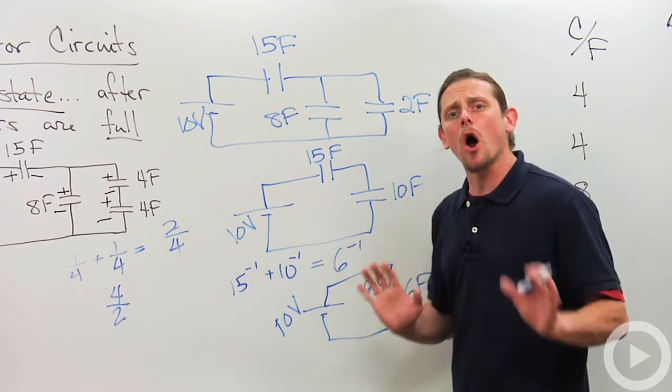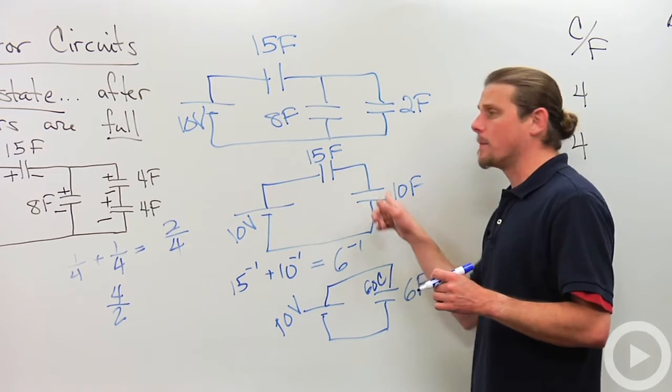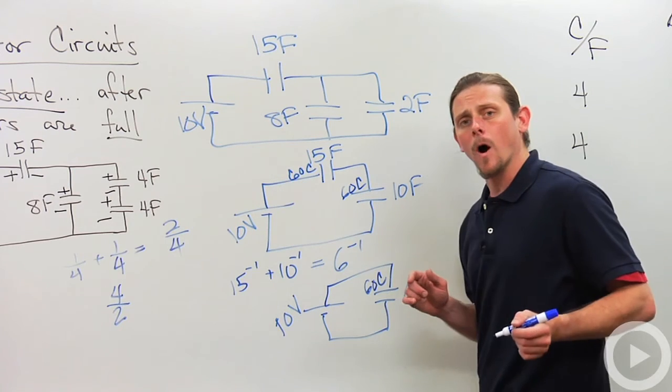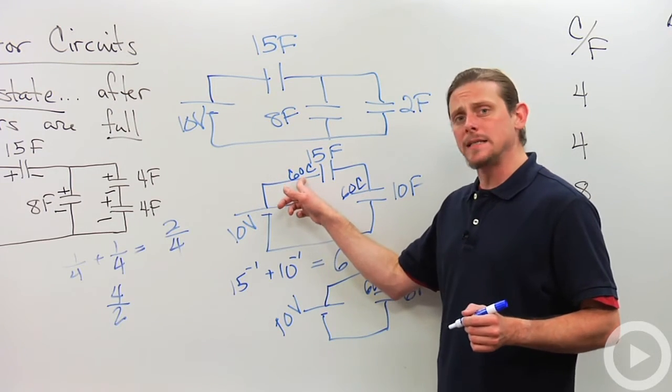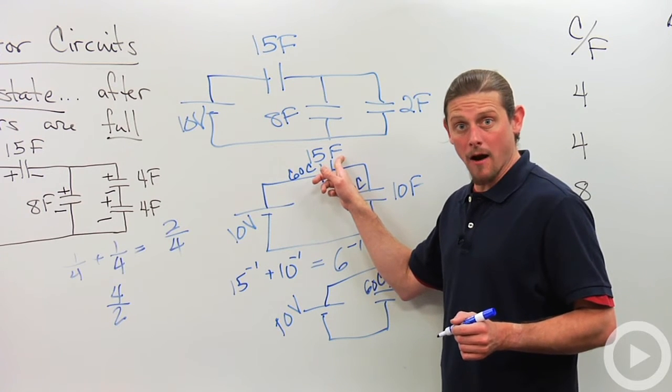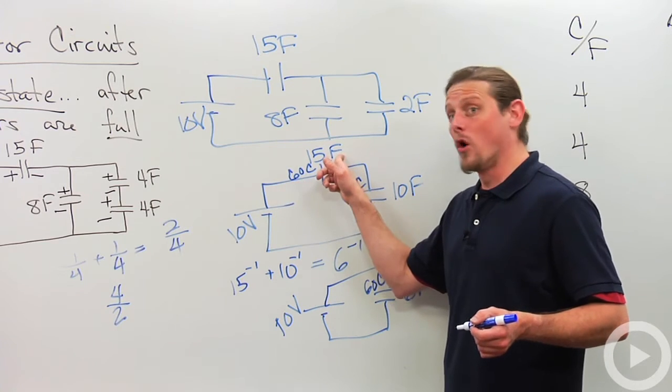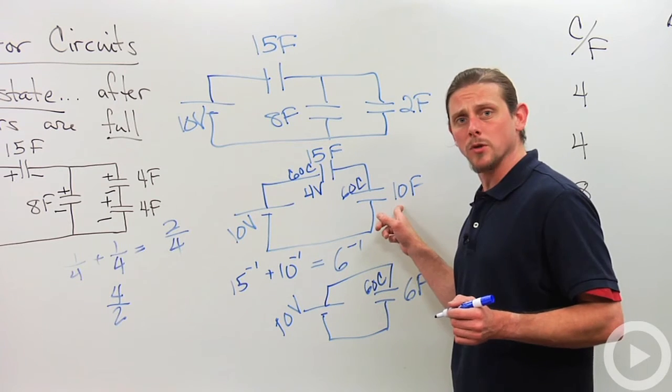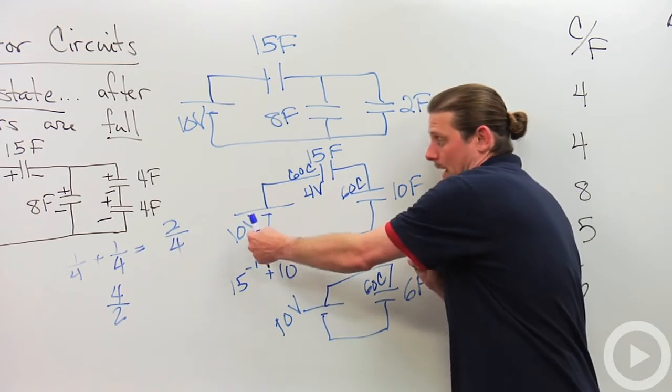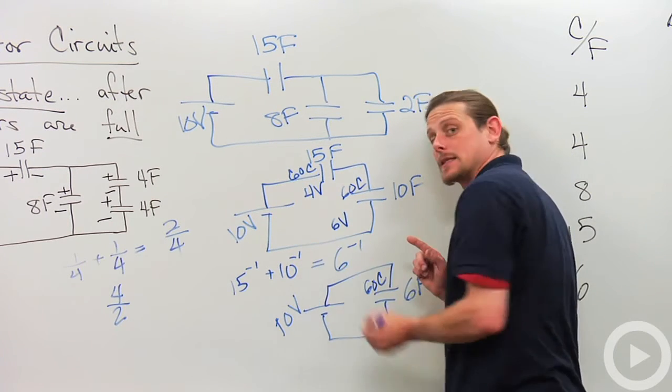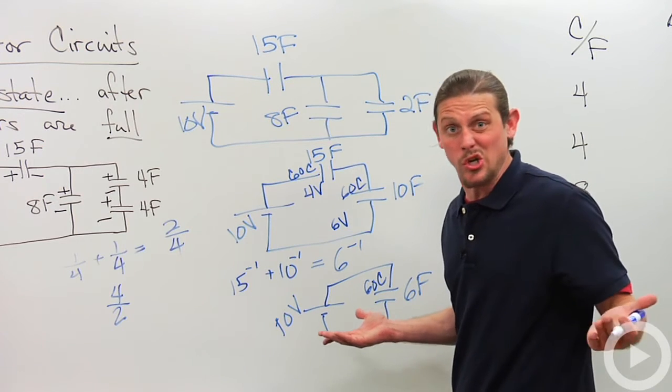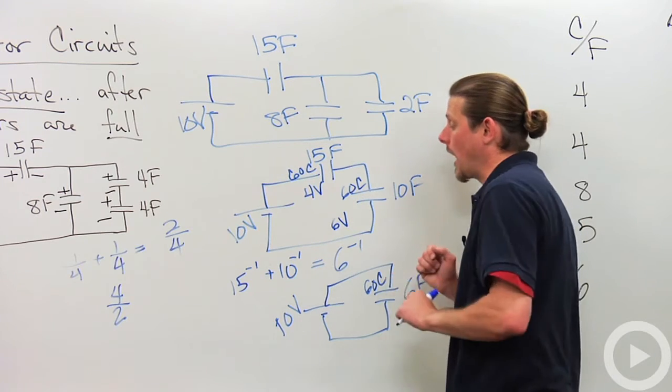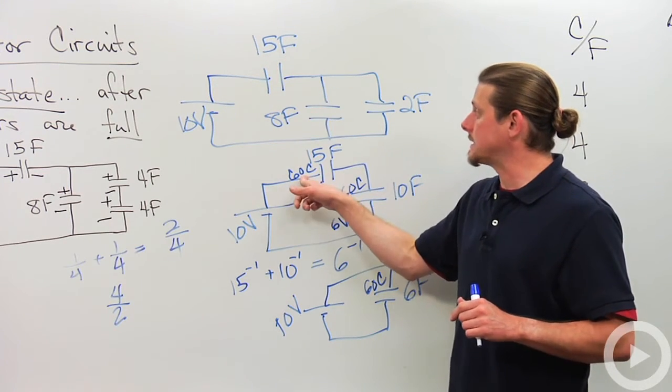So in series, charge is the same. So that means that both of these capacitors have 60 coulombs. Now, 60 coulombs with 15 farads potential difference is Q over C. So this guy is 4 volts. What does that mean this one's supposed to be? Well, he's supposed to be 6 volts because I got 10 all together. 4 here. So I got 6 left over. Another easy way that we could do that is just Q over C again. 60 over 10 gives 6. So now I've got my 15 all covered. 60 coulombs, 4 volts.